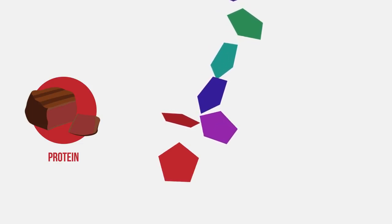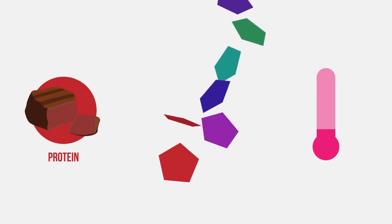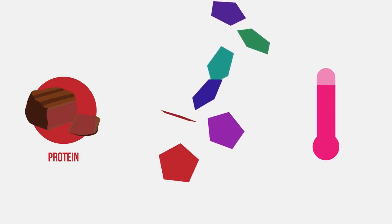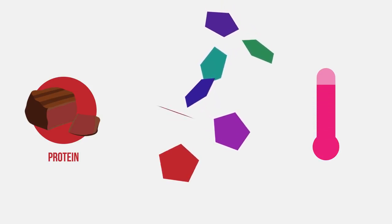Because enzymes are proteins and the bonds holding proteins together are weak, this is why enzymes denature above certain temperatures. The bonds are broken and the structure of the protein is changed.